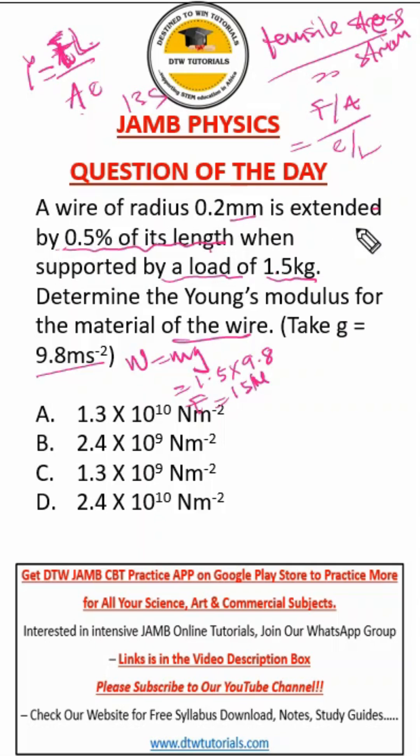So extension, are you with me? It's 0.5% of its length. We don't know the length, but we know our extension is 0.5% of its length. And what is 0.5%? That's 0.5 divided by 100, which gives us 0.005 times L. So we know our extension is 0.005L.